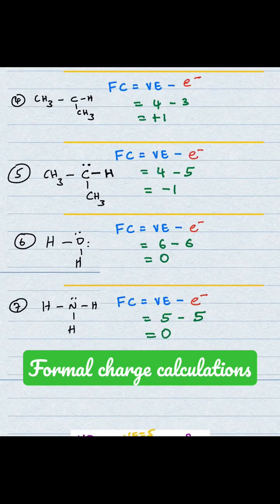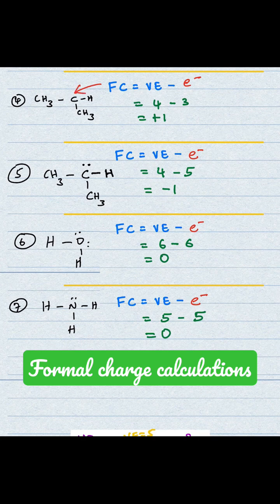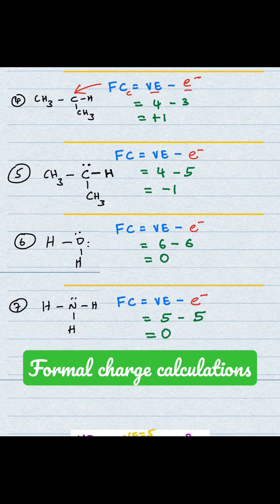Next, we're looking at this carbon here. We're trying to determine its formal charge. We use the formula valence electrons minus the number of electrons. We know that carbon is in group 4A, therefore the valence electron is 4.